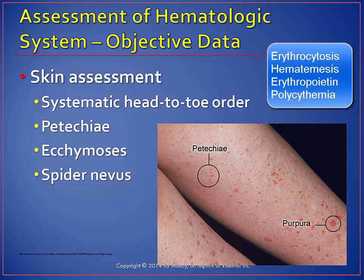Hematemesis is a symptom of an underlying problem and should always be investigated. Peptic ulcer disease is a common cause. Determine if the patient has a fever, recurring fevers, chills, or night sweats. Cardiovascular disorders such as valvular disease or hypertension may predispose patients to hemolysis. Pulmonary disorders can lead to hypoxemia, may cause chronic stimulation of erythropoietin, and result in polycythemia.